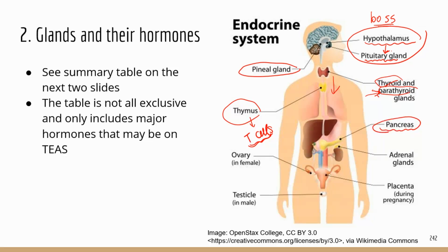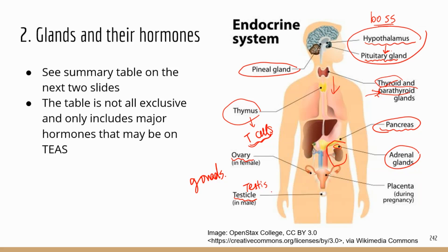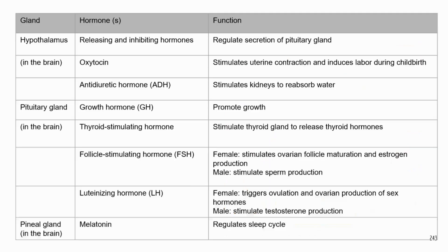The pancreas — which we covered in the digestive system — secretes hormones that regulate glucose levels. The adrenal glands sit atop the kidneys, one on each side. Finally, the gonads are endocrine glands shared with the reproductive system. They secrete sex hormones — some major ones for each sex, which we'll go over shortly.